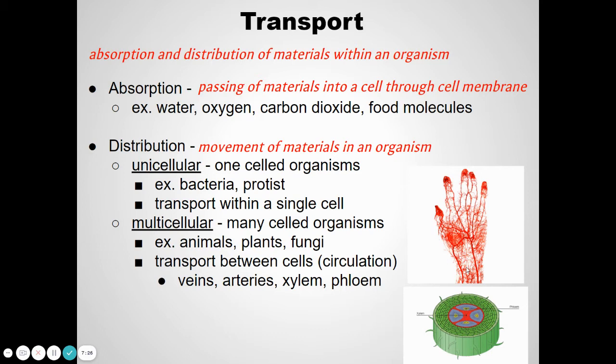Sometimes we actually tap into a plant's transport system. If you tap a maple tree — hammering a little metal piece into it — the sap flowing through has lots of sugar. You collect it in a bucket, boil away the water, and you make maple syrup. It's like a circulatory system but for the plant.